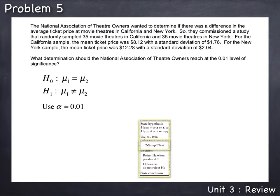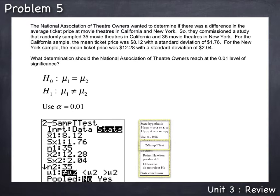To get to the 2-SAMP t-test command, we press STAT, arrow over to TESTS, arrow down, and select 2-SAMP t-test, and press ENTER. In the 2-SAMP t-test command, the first line prompts us for what to input into the calculator. The choice is data or stats. This problem did not give us the actual sample data — instead it gave us the number of movie theaters (the sample size), the mean ticket prices, and the standard deviation of ticket prices. These are the statistics. Since we're given the statistics, we need to arrow the cursor over to stats and press ENTER to select. With stats selected, the calculator prompts us for the statistics, beginning with the first sample statistics — in this case, California.